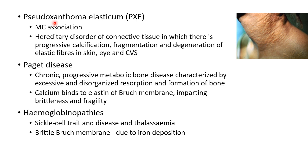Now let us discuss about the various systemic associations of angioid streaks. The most common association is pseudoxanthema elasticum. It is a hereditary disorder of connective tissue in which there is progressive calcification, fragmentation and degeneration of elastic fibers in skin, eye and cardiovascular system. This degeneration in the eye causes angioid streaks.